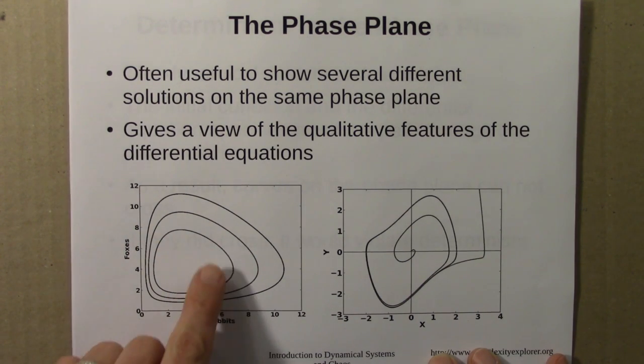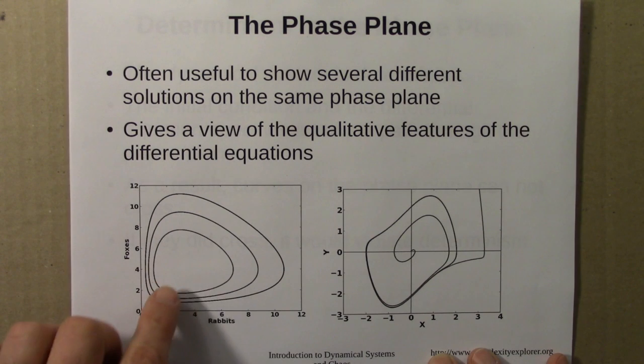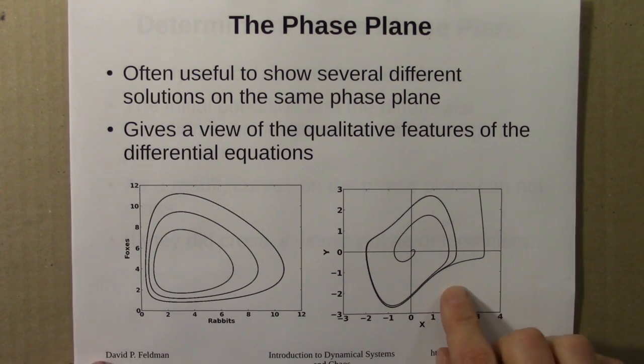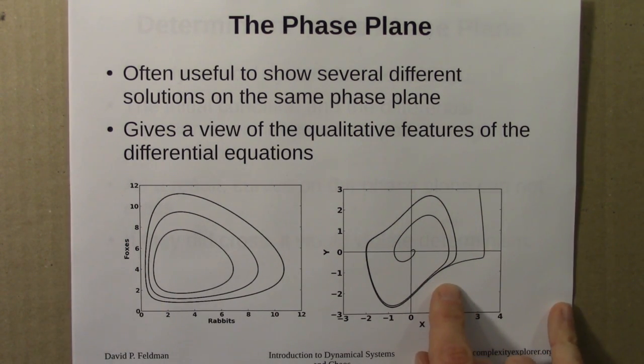These cycles turn out to be neutral, meaning that they're neither attracting nor repelling. If you're on this cycle and you move off a little bit, you're just on another cycle. You don't get repelled away or pushed back.